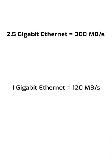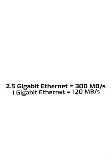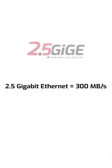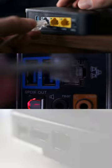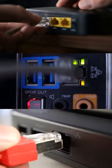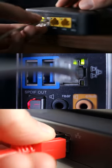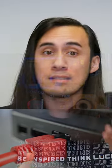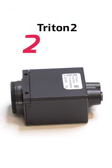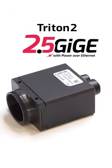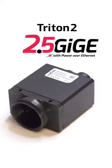2.5 gig is quickly becoming the new entry-level standard for Ethernet connectivity, as more and more electronic devices are including it as default instead of 1 gig. And to add to that list is Lucid's Triton 2 2.5 gig industrial camera.